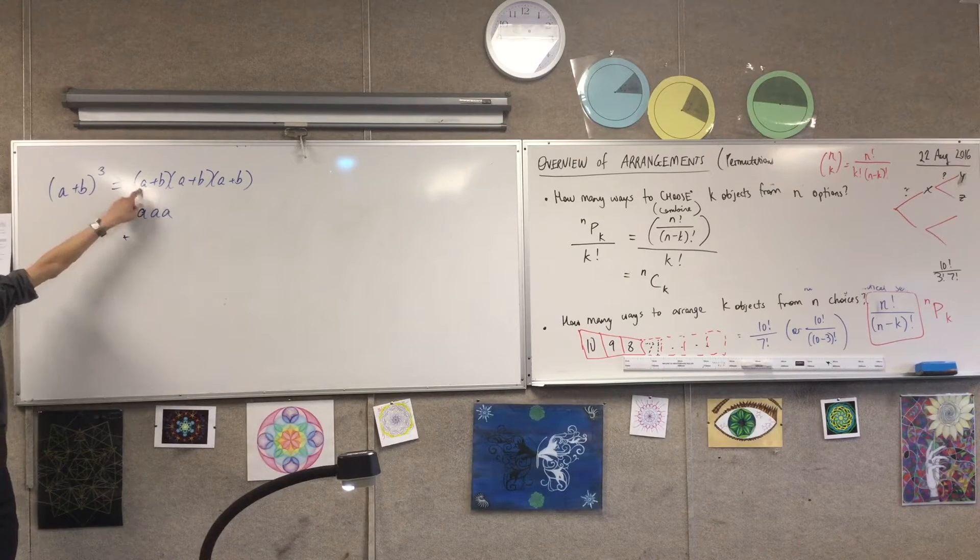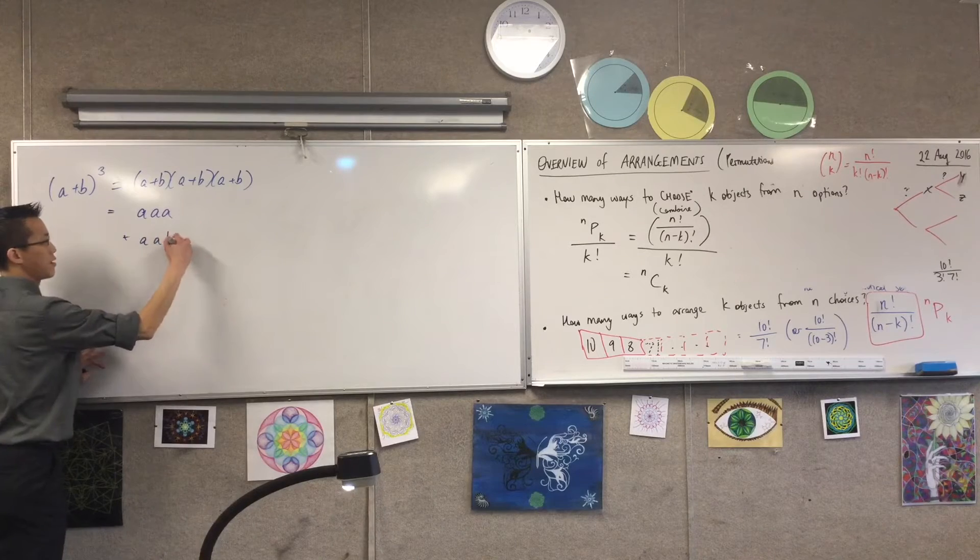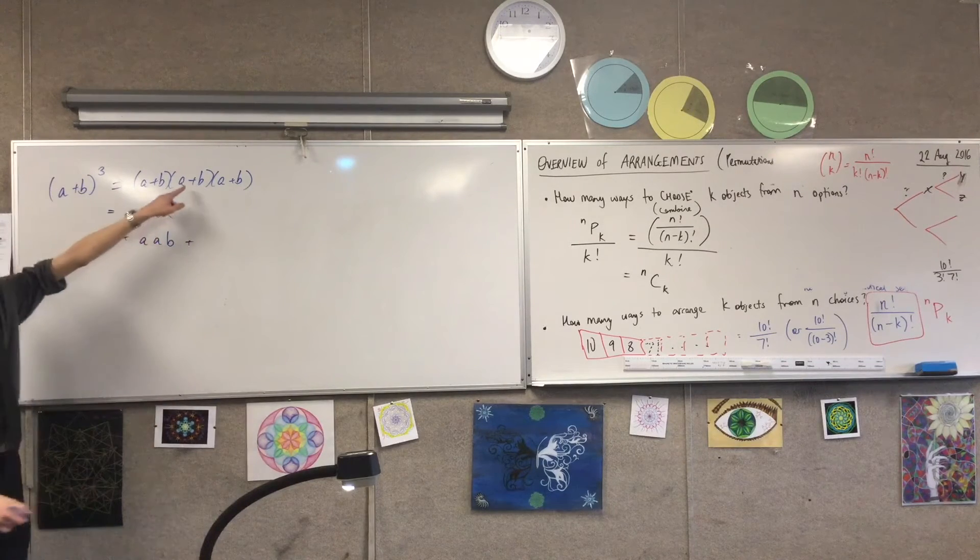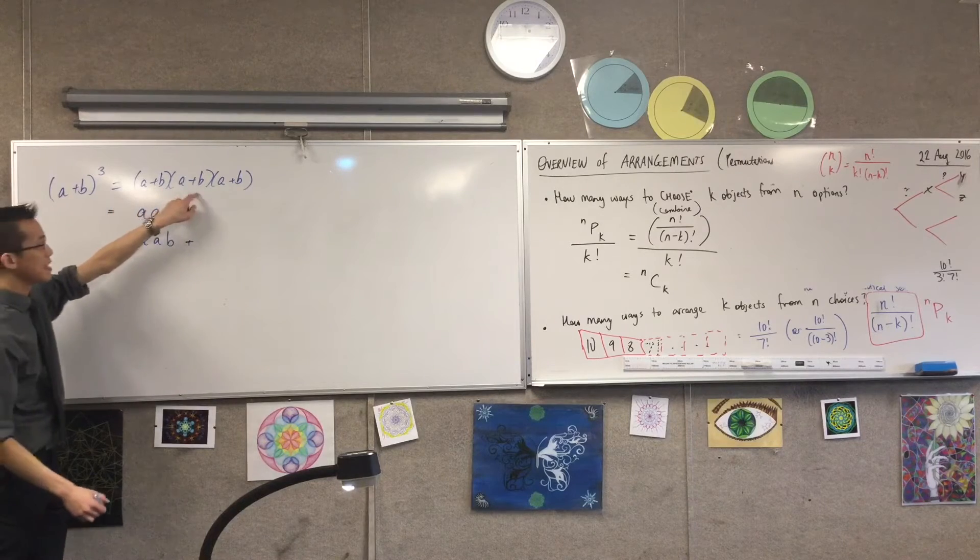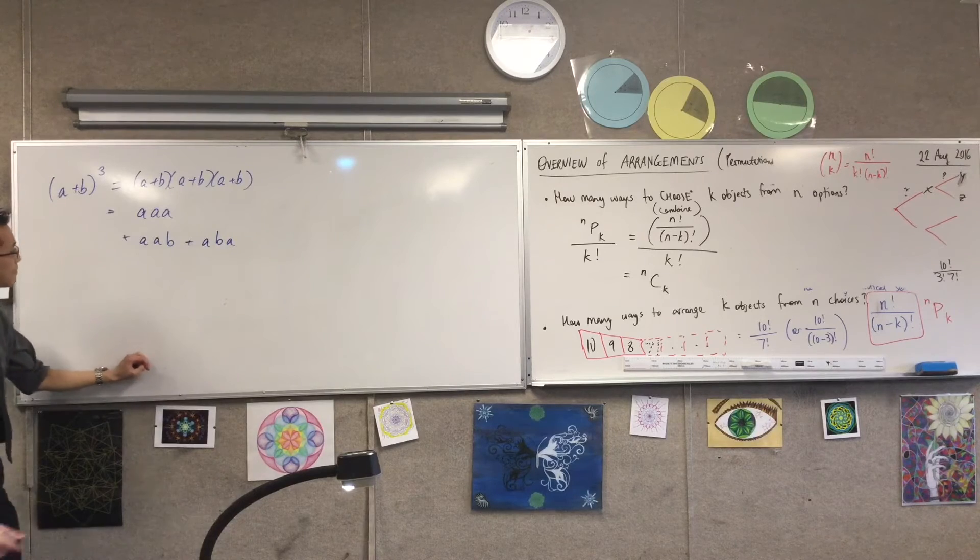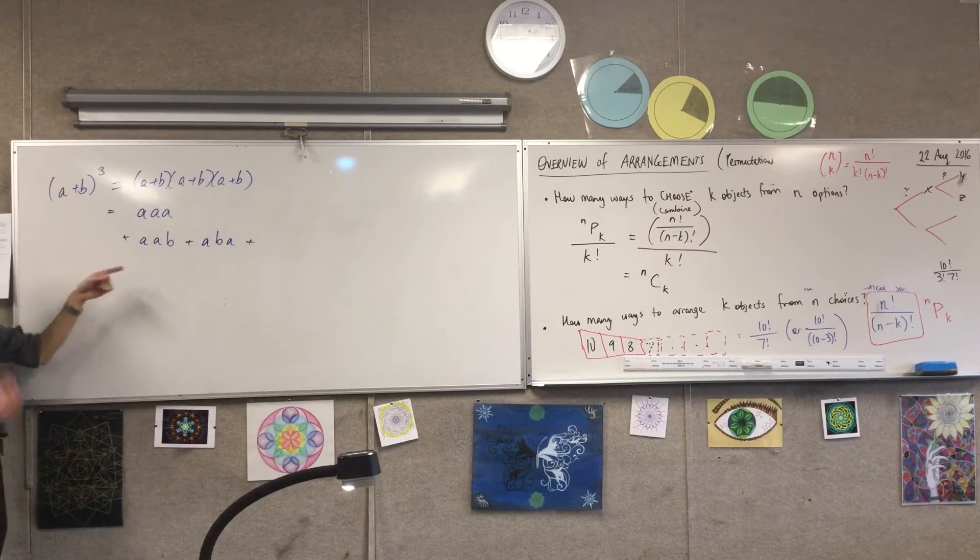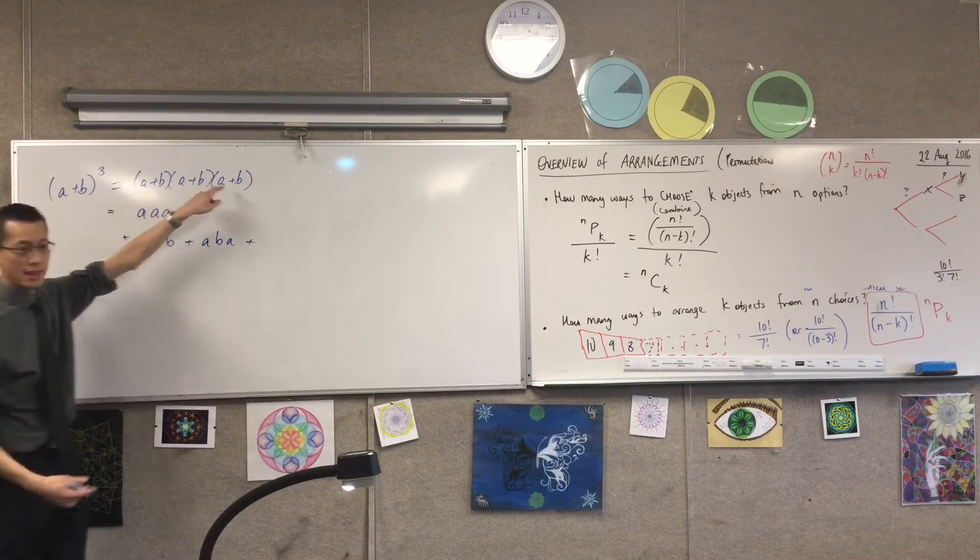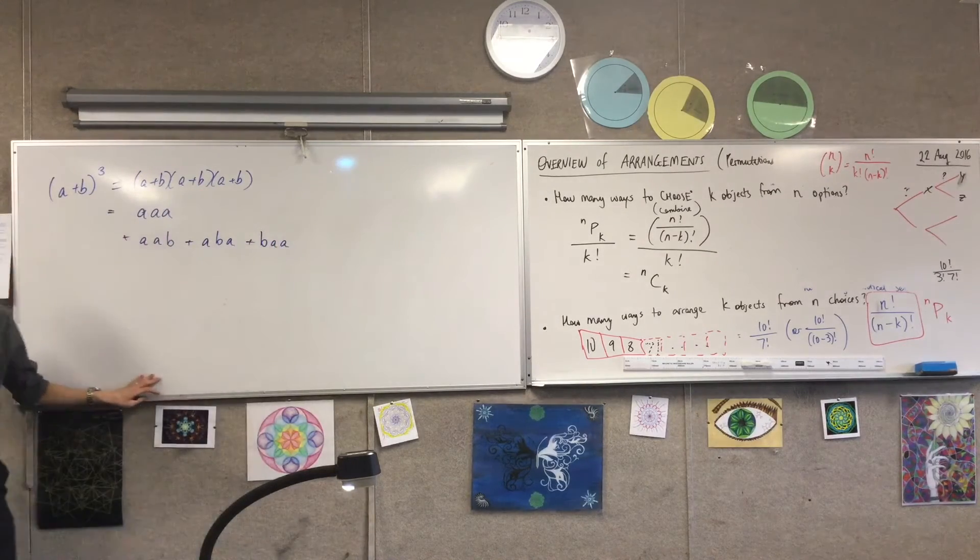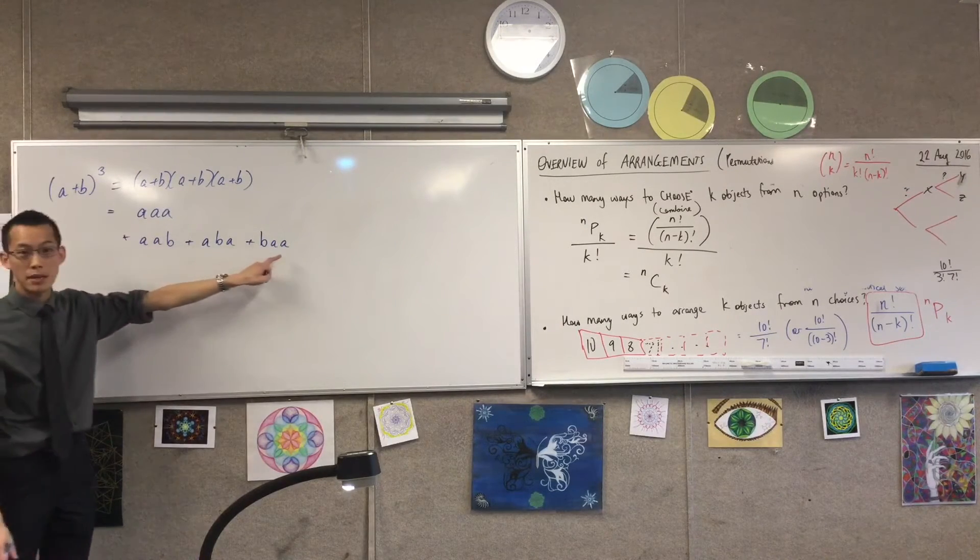That's not the only one. I could have A, A, and then B. Or A, B, and B. How about I change the middle one? How about A and then B and then A? And how about if I choose B first? B and then A and then A. You see, this is all the ways that I could just have one of the B's picked out. Does that make sense?